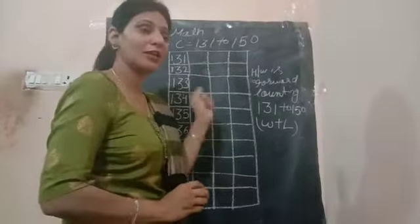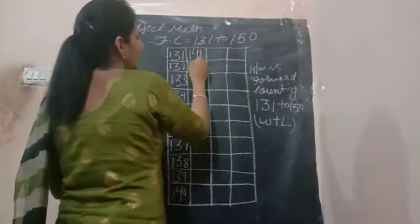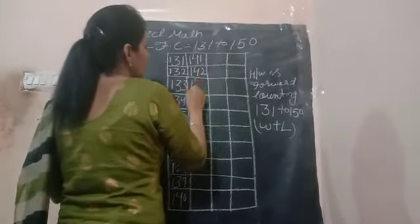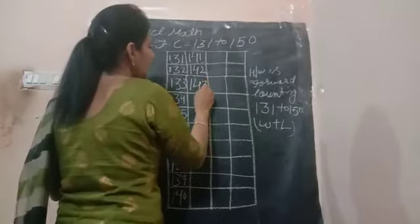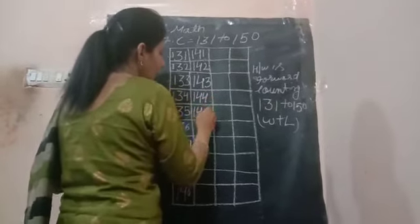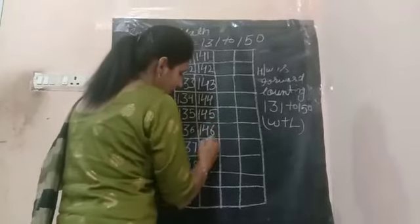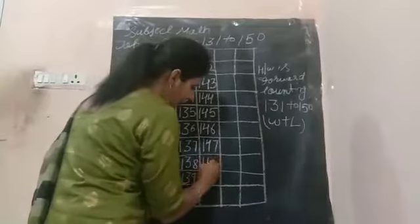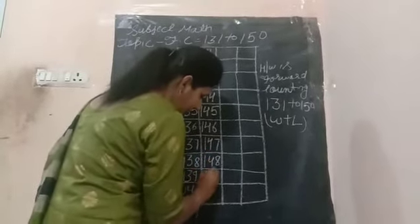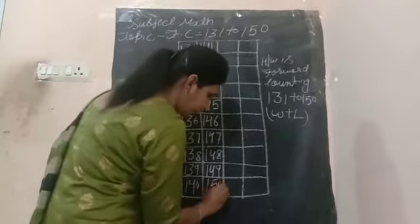Now we start next line. 141, 142, 143, 144, 145, 146, 147, 148, 149 and 150.